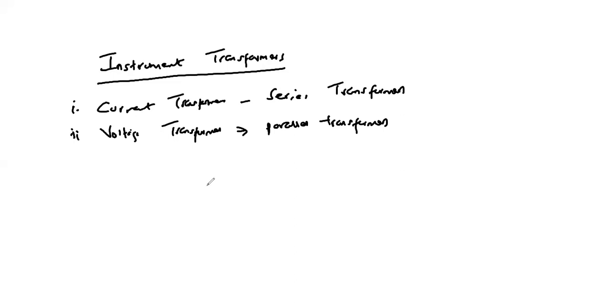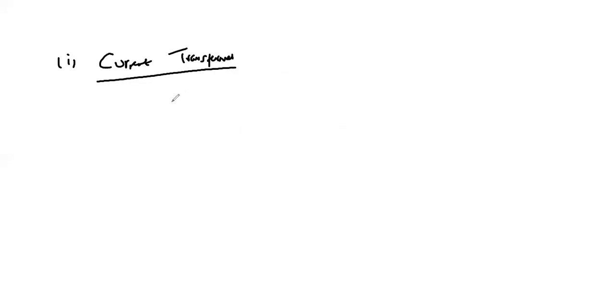Potential or voltage transformers are used where the voltage of the AC circuit exceeds 750 volts, since it is not possible to adequately insulate the measuring system for voltages higher than 750 volts. We will look at the configuration and operation of each of them, starting with the current transformers in measurement of heavy currents.